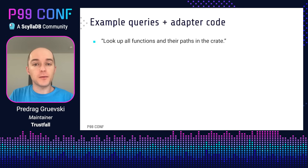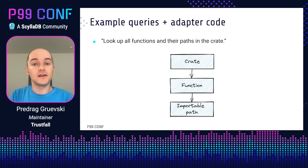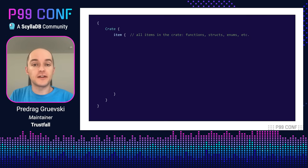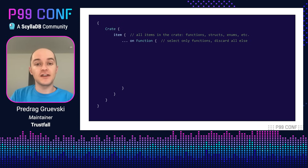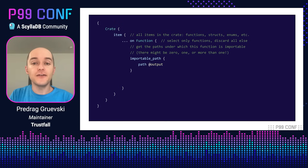We're trying to implement predicate pushdown, so that's the kind of optimization we'll be looking at. Let's look at a few examples, starting with something simple and working our way up to the full predicate pushdown optimization in Cargo Semverchecks. Let's first look up all functions and their paths in the crate. As a diagram, it would look something like this: we start with the crate, we look up all the functions contained within, and for each function we look up its importable path. In TrustFall syntax, it looks something like this — we start with the crate, look at all the items in the crate, which includes functions, structs, enums, and so on. We filter down to only functions, look up the importable path of which there might be zero, one, or more than one, and output the path property. And if we felt like adding any more query clauses, we could put them between any pair of curly braces here.